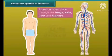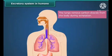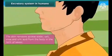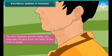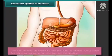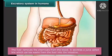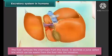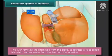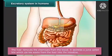Excretion takes place through the lungs, skin, liver and kidneys. The lungs remove carbon dioxide from the body during exhalation. The skin removes excess water, salt, urea and uric acid from the body in the form of sweat. The liver removes chemicals from the blood and secretes a juice called bile, which carries waste from the liver into the intestine.